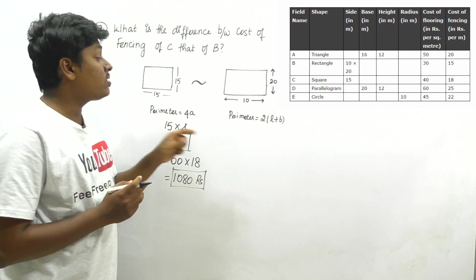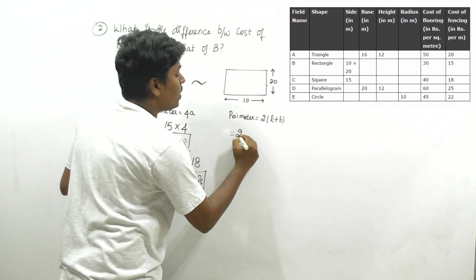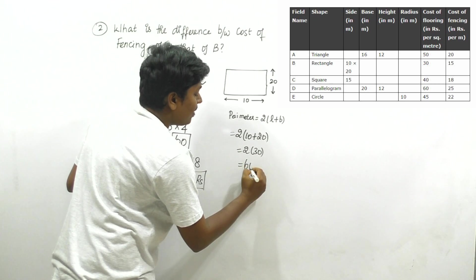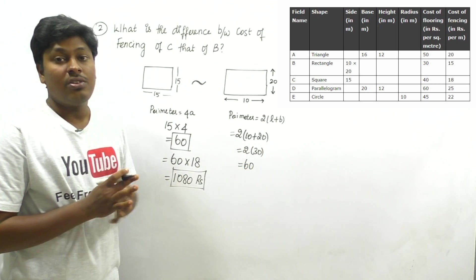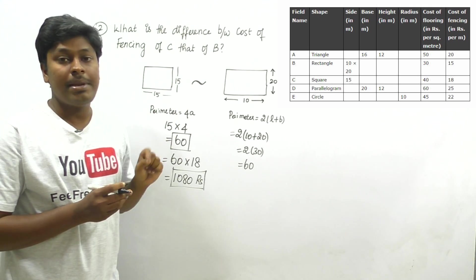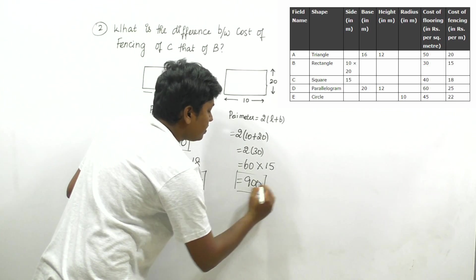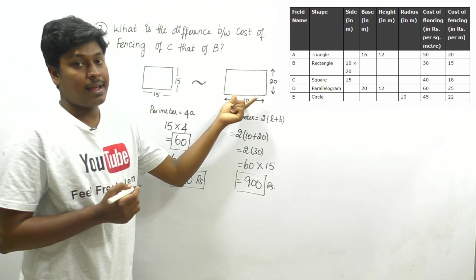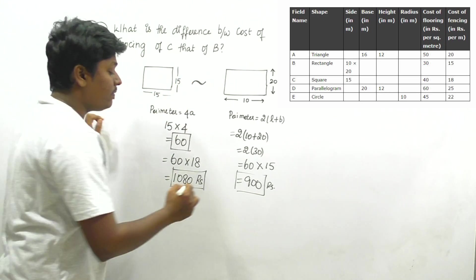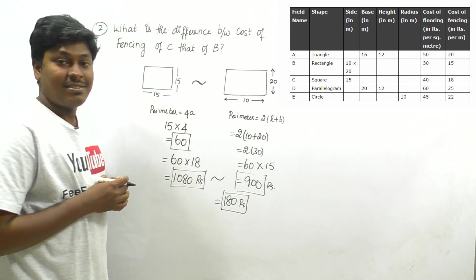For rectangle B: perimeter = 2 × (length + breadth) = 2 × (10 + 20) = 2 × 30 = 60 meters. The fencing cost is 15 rupees per meter. So 60 × 15 = 900 rupees. The difference between the two fencing costs is 1080 − 900 = 180 rupees.